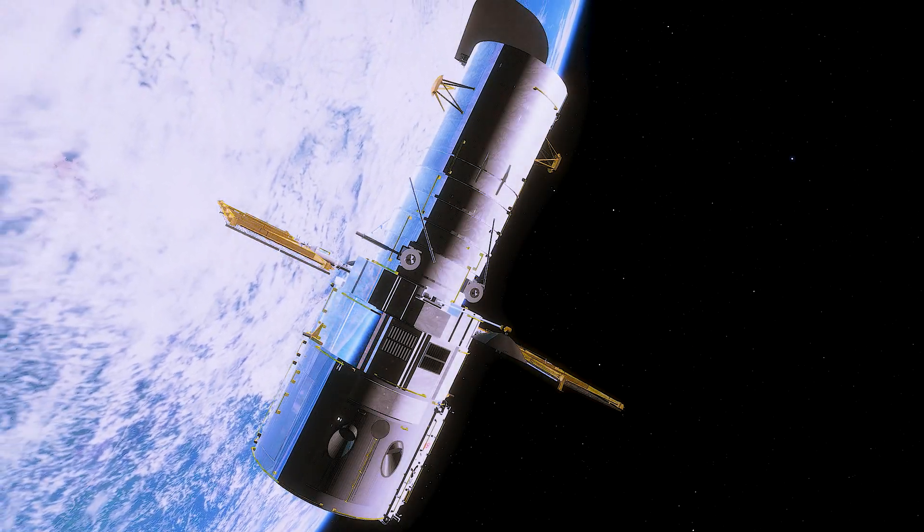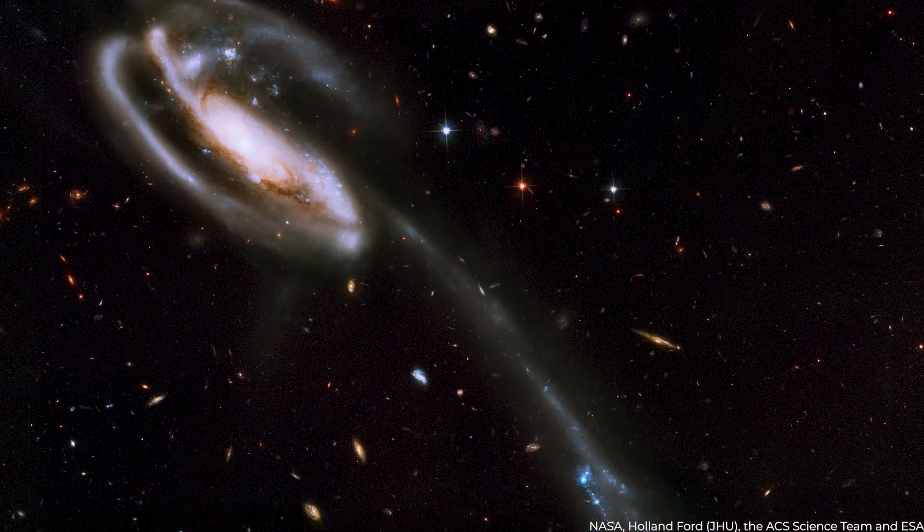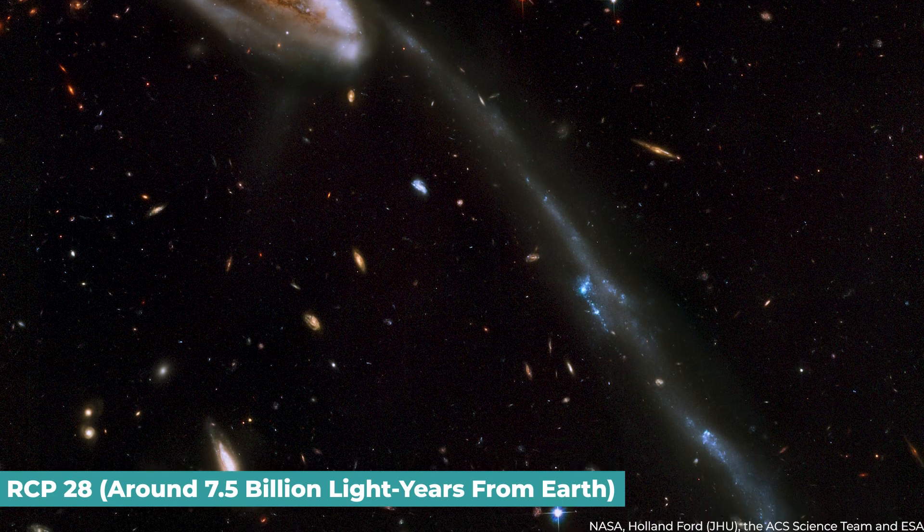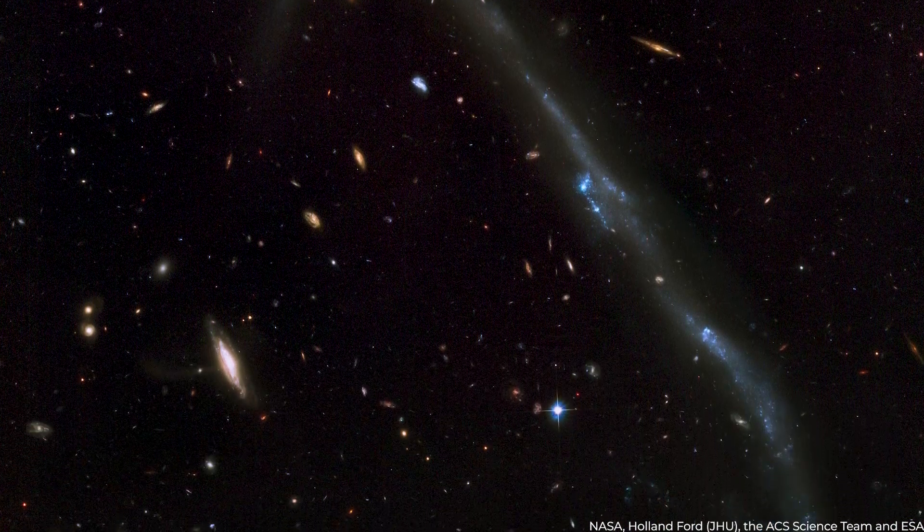Using the Hubble Space Telescope, scientists observed the dwarf galaxy RCP-28 at a distance of around 7.5 billion light-years from Earth. They saw the racing black hole as a brilliant streak of light.